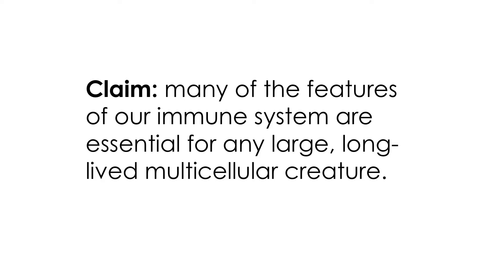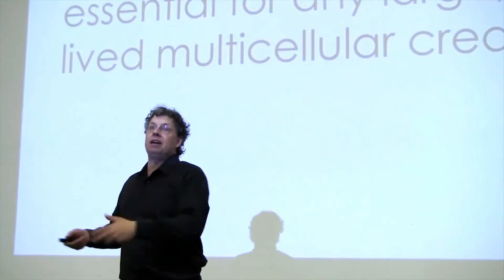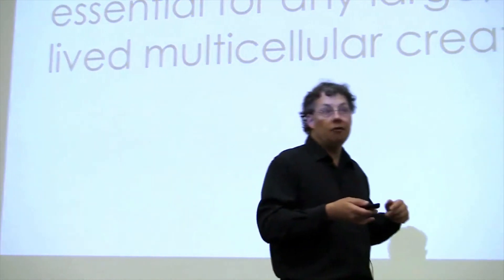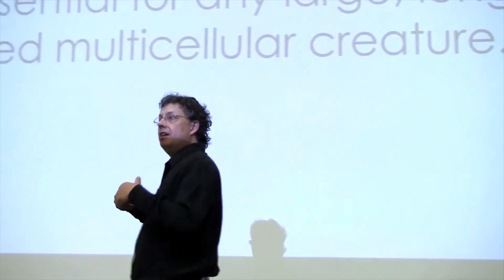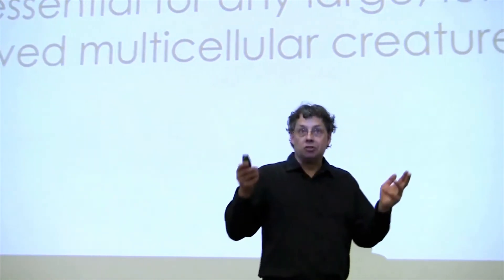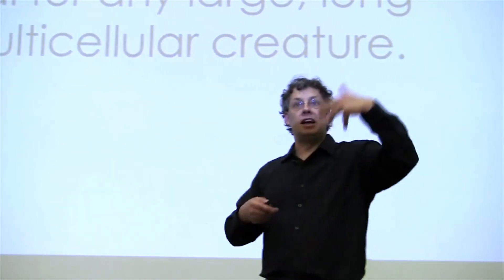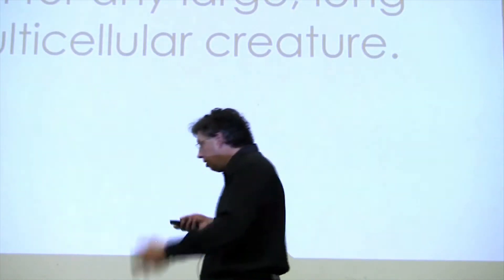So any kind of creature that's big and lives for a long time, in order to deal with pathogens and parasites, it would have to have features like the recombinational generation of diversity in the immune system, and affinity maturation, and clonal selection, and immune memory, and antibody production, and so on.